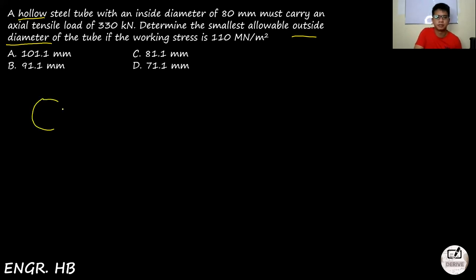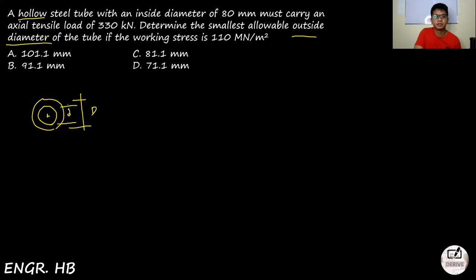Let's say this is our circle — the cross-section. We have capital D, which is the outside diameter, and small d, which is the inside diameter. That was for the cross-section of the tube, which is circular.